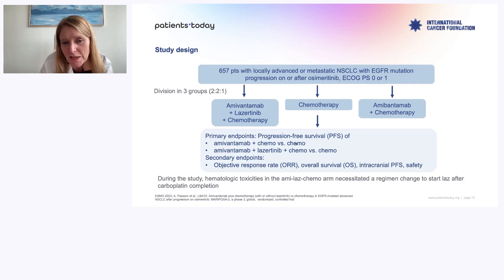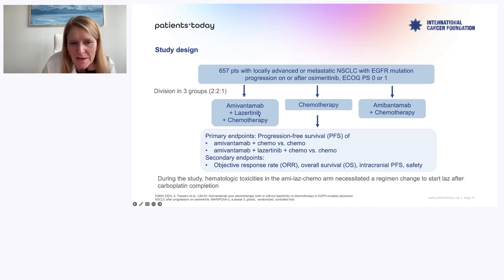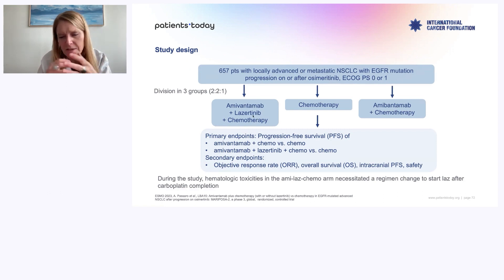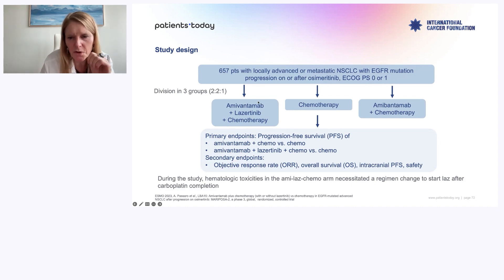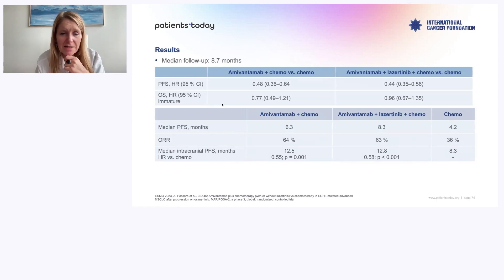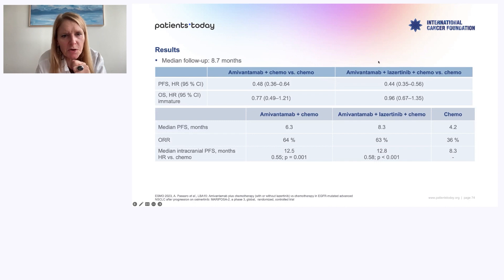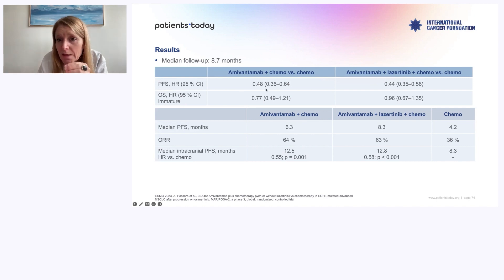Very smart pharma trying to position amivantamab frontline, and if not, position it in second line with chemo or with chemo plus lazertinib — the full package. The full package of amivantamab-lazertinib-chemo was extremely toxic: hematological toxicity, all the rash, and a lot of thrombosis. That I would not advise. But if you look at amivantamab-chemo versus amivantamab-lazertinib-chemo versus chemo only — adding amivantamab to chemo gives a hazard ratio of 0.48, really improving PFS in second line.